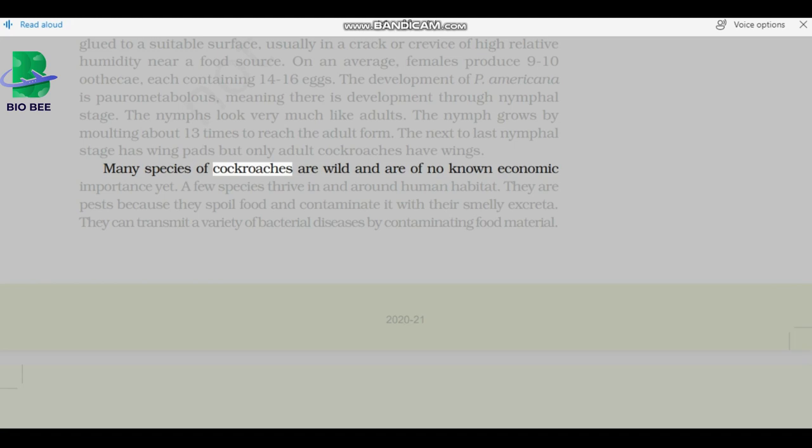Many species of cockroaches are wild and are of no known economic importance yet. A few species thrive in and around human habitat. They are pests because they spoil food and contaminate it with their smelly excreta. They can transmit a variety of bacterial diseases by contaminating food material.